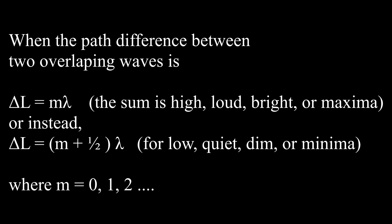When the path difference is an integer number of half wavelengths, then the two waves add up to a low, quiet, dim, or a minimum.